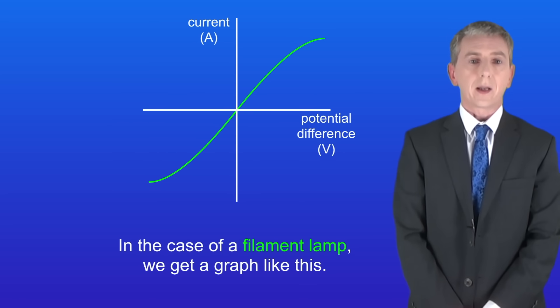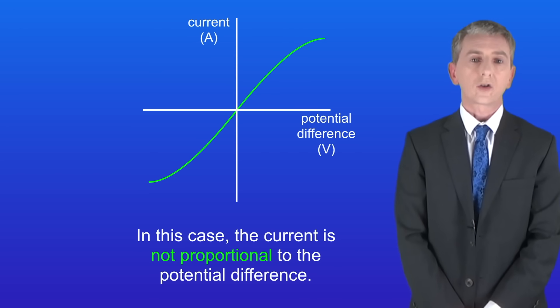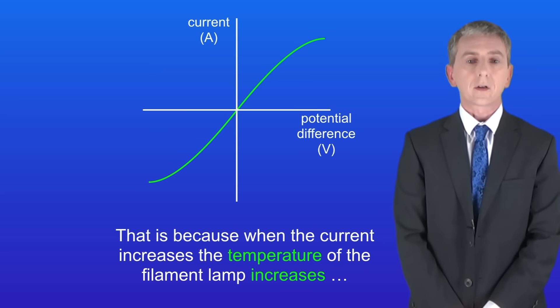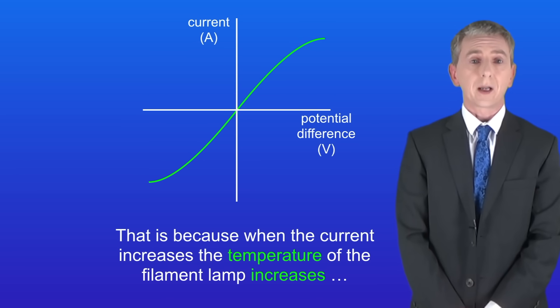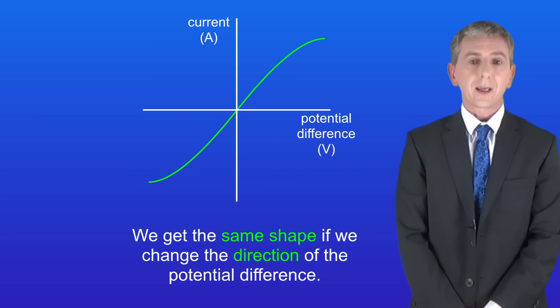In the case of a filament lamp we get a graph like this. In this case the current is not proportional to the potential difference. That's because when the current increases the temperature of the filament lamp increases, and the increased temperature causes the resistance to increase. You'll notice that we get the same shape if we change the direction of the potential difference.